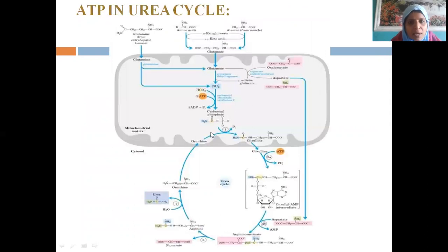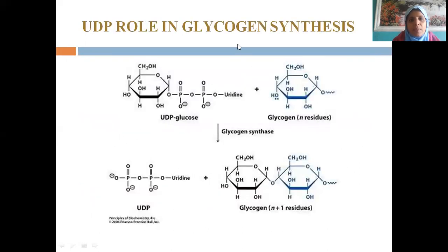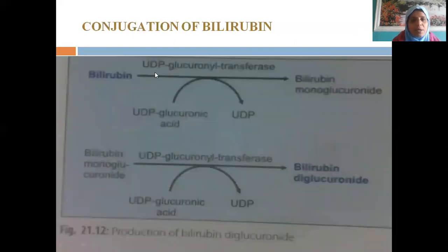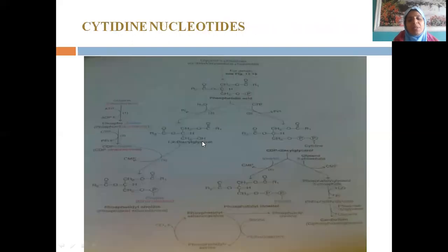In the urea cycle, ATP is highlighted in many places, indicating reactions involving production or utilization of ATP. Similarly, uridine — UTP — is involved in many reactions as a source of energy for substrates where ATP cannot be utilized. UDP-glucose is seen in glycogen synthesis for the formation of glycogen; that means uridine diphosphate is involved. UDP is also utilized for the conjugation of bilirubin — UDP glucuronic acid forms bilirubin diglucuronide — and in galactose metabolism.